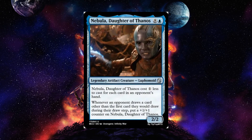Nebula, Daughter of Thanos, is a nine-cost blue legendary artifact creature 2-2, and it costs one less to cast for each card in an opponent's hand — so it can very quickly become cheap. Whenever an opponent draws a card other than the first card they draw during their draw step, put a +1/+1 counter on it. It's often going to be like a one-drop 2-2 that may get bigger. As a commander, turn one Nebula could result in a very large commander as anyone draws cards. Potentially a powerful commander card.